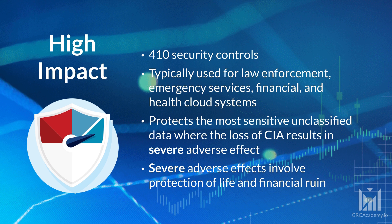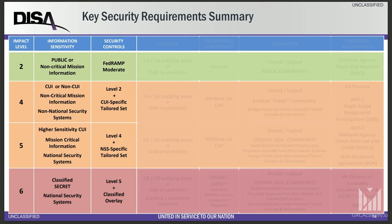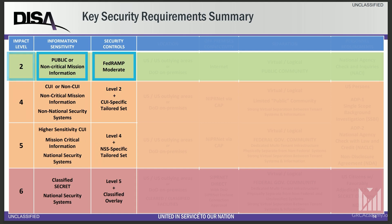The FedRAMP office has done its best to standardize the security requirements for federal agencies, but agencies can still establish supplemental requirements. The DOD has established supplemental requirements in its Cloud Security Requirements Guide, or SRG, which defines four impact levels stating the level of information the cloud system is authorized to contain. Notably, FedRAMP moderate is equivalent to DOD's Impact Level 2, which is used to authorize DOD cloud systems that host information on public websites or non-critical mission information.